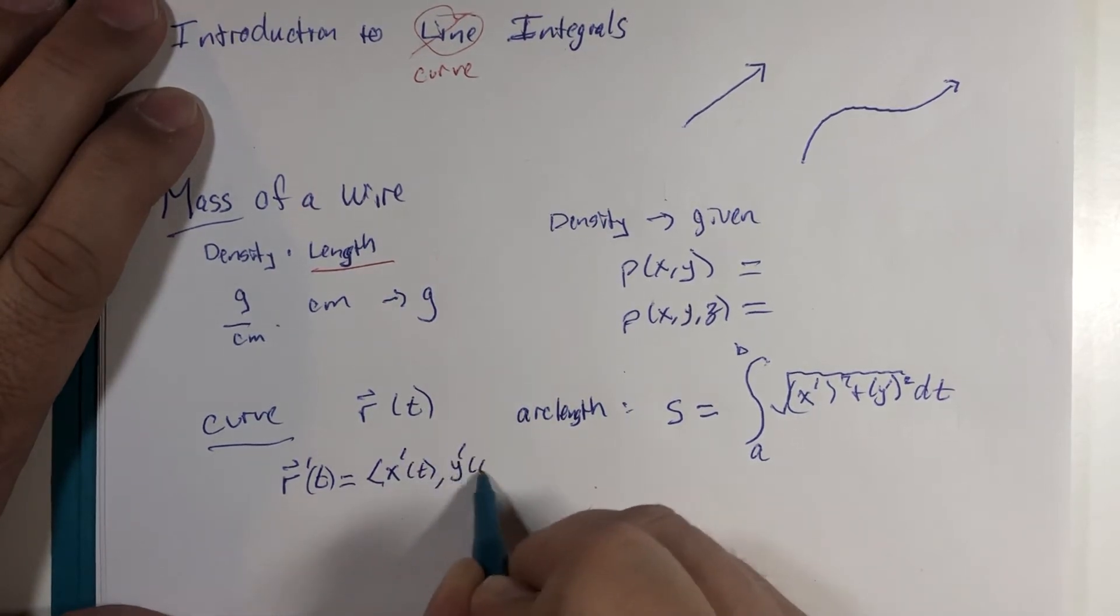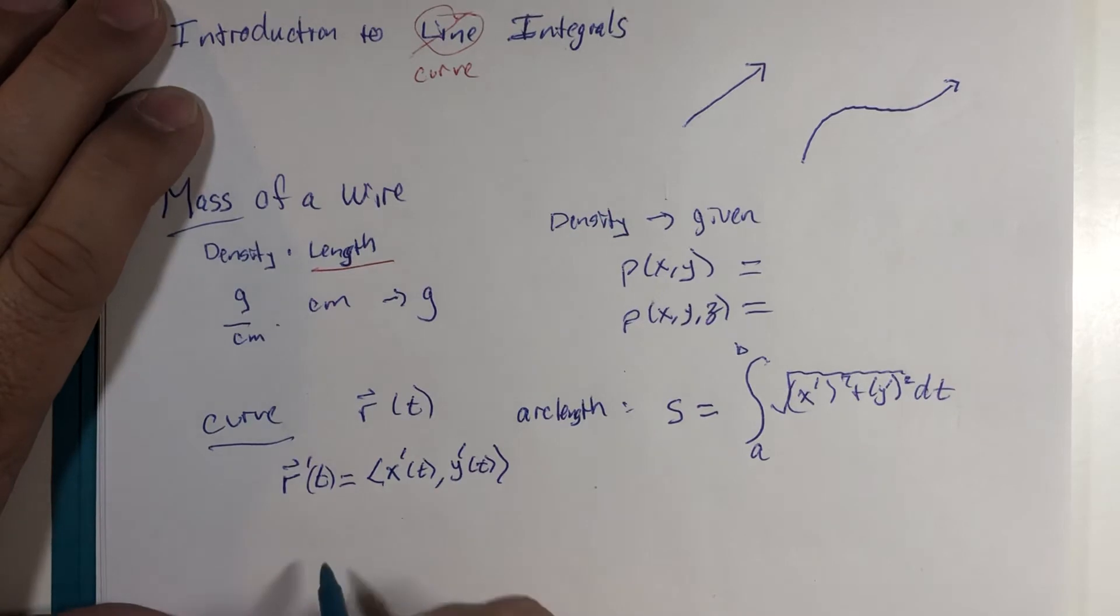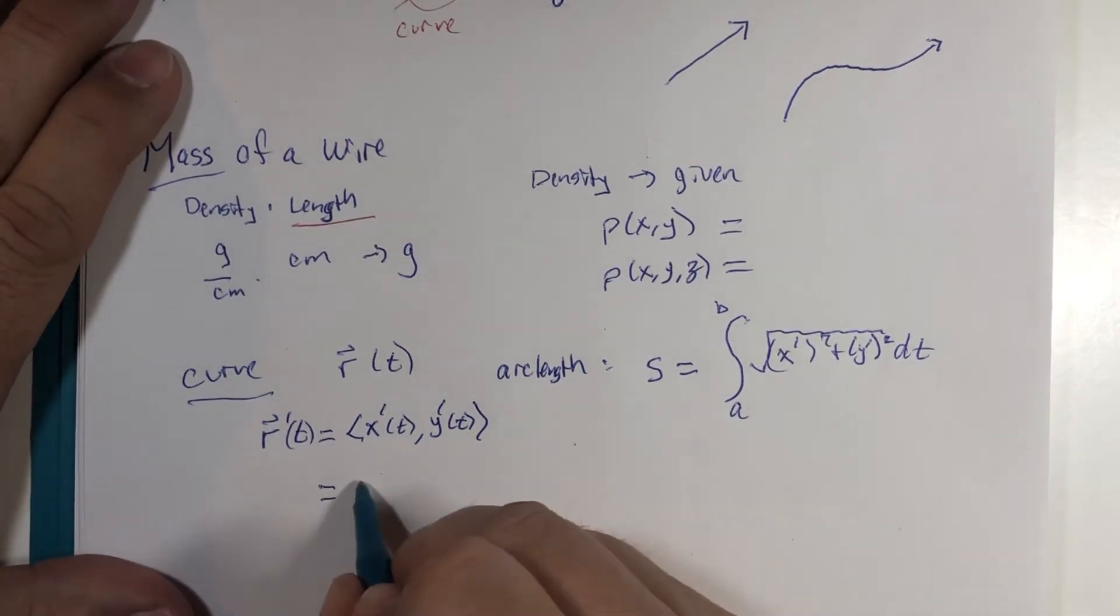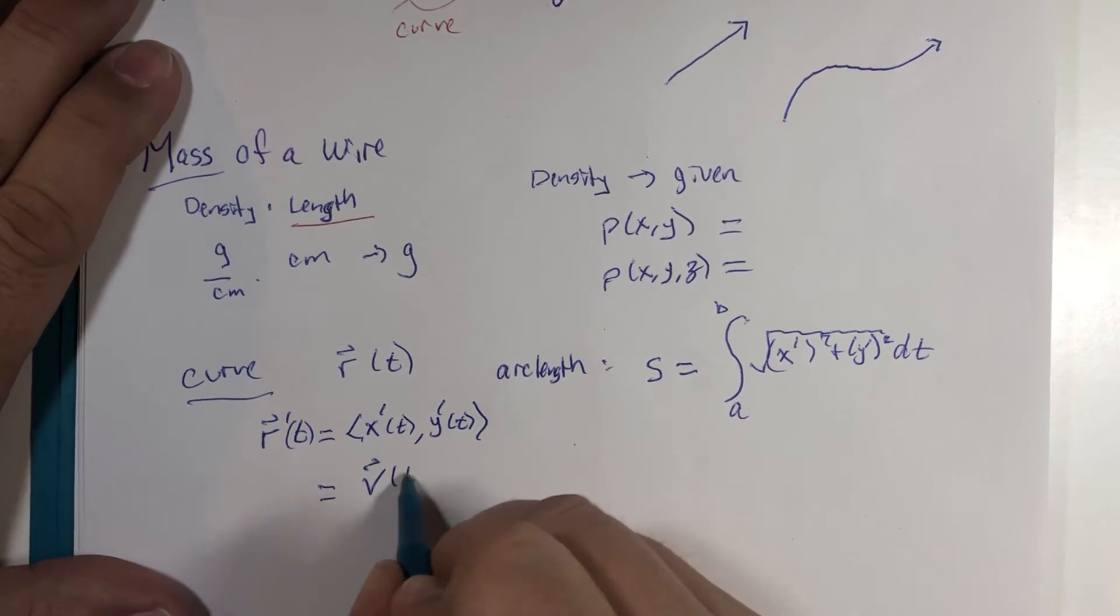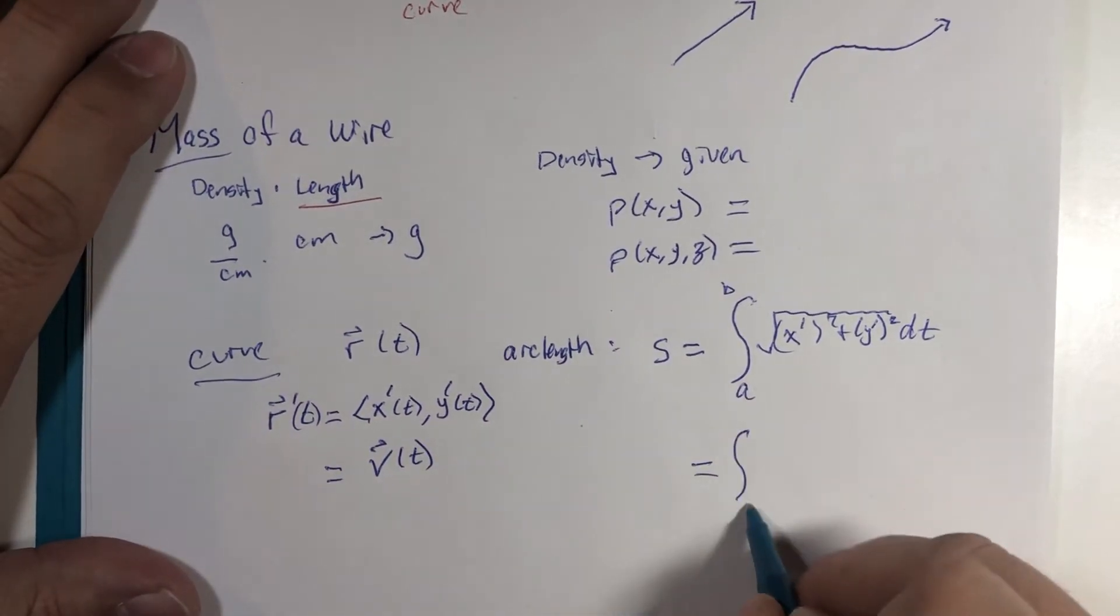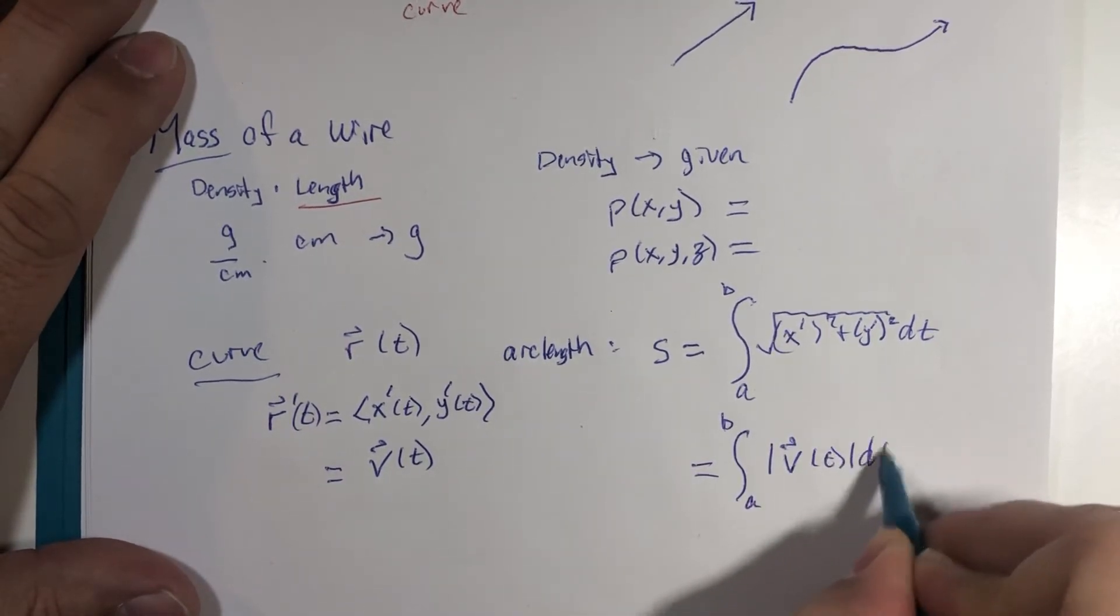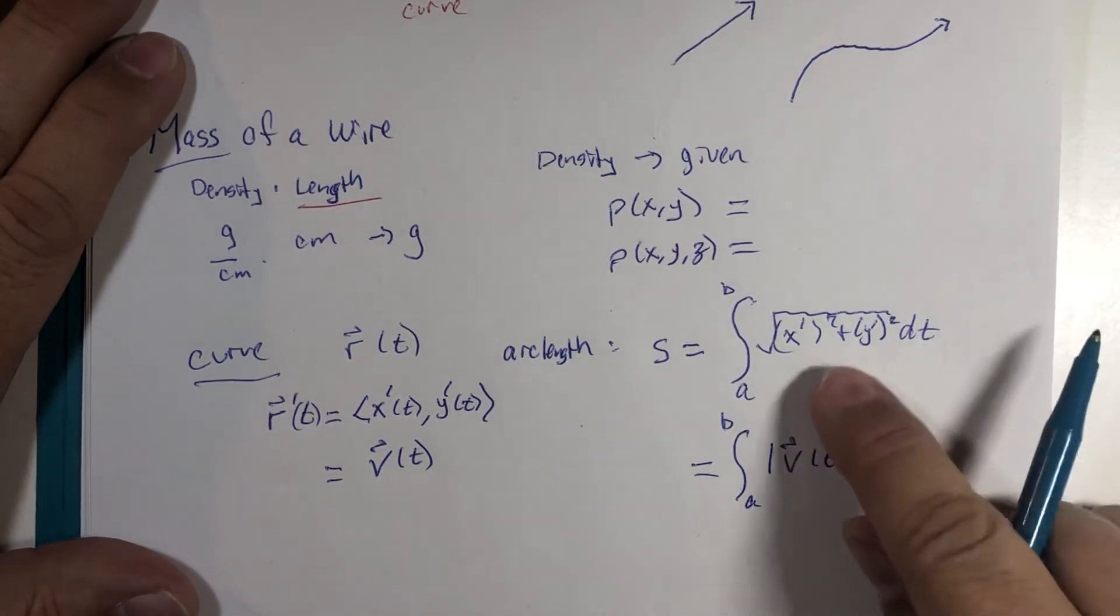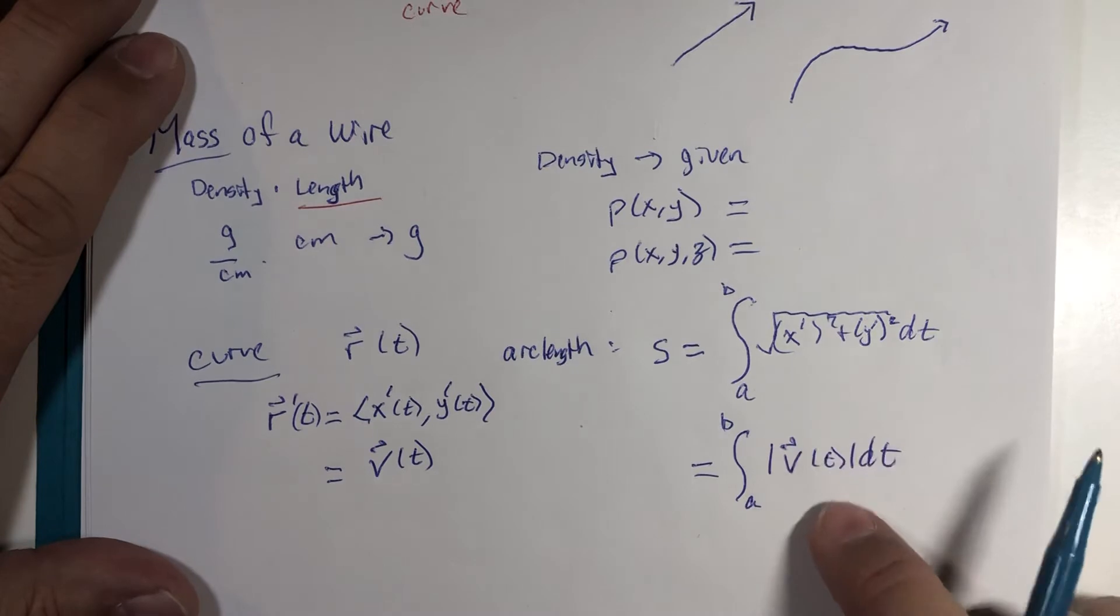But we also learned later that this r prime was called the velocity vector, and that made this expression here nothing more than the magnitude of the velocity vector. Depending on the book and the teacher, you might have used the first as your primary formula or you might have used the second as your primary formula.